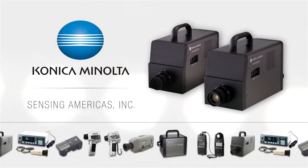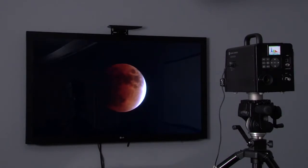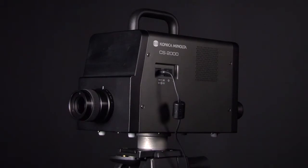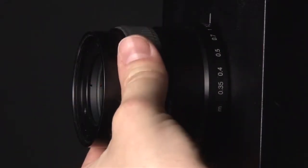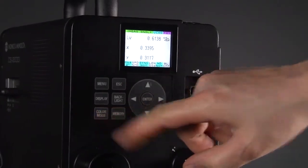Konica Minolta Sensing really has products for every stage of the development process of a light source. For the research and development, we have CS2000, which is a very accurate spectroradiometer. So the CS2000 can really be considered the heart or the center of any R&D lab.